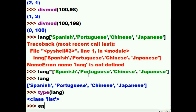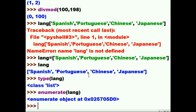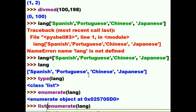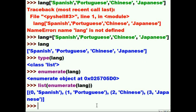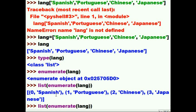Let's enumerate this now. If I just call enumerate(lang) I get something unexpected that doesn't help too much. What I should do is make a list out of this enumerated lang object — list(enumerate(lang)) — and let's see what we get. I like that: zero Spanish, one Portuguese, two Chinese, and three Japanese.